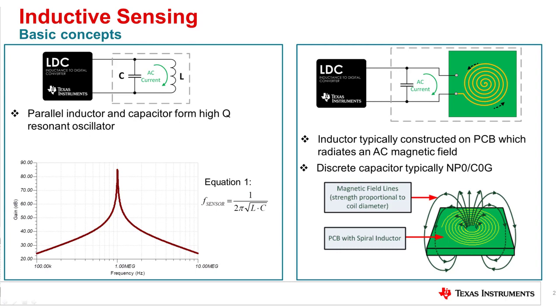When no metal target is present in the vicinity, the LC tank has an inherent resonant frequency that can be obtained by equation 1. The LDC device must drive the LC tank to achieve its resonant frequency and also converts the fundamental frequency of the LC tank to a high resolution digital value.